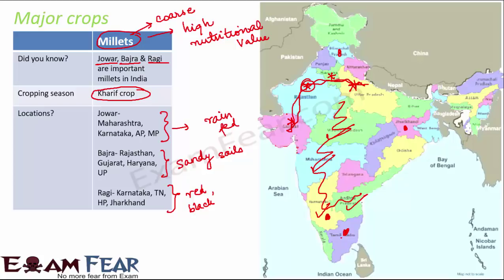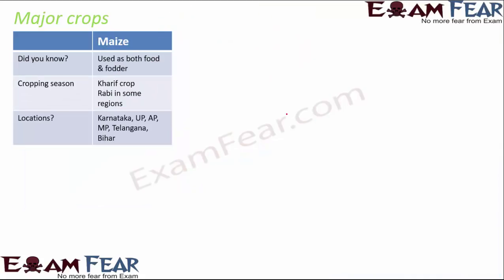You might wonder why millets are not as popular as rice, wheat, or maize despite being nutritious. This is due to less demand for millets and also low productivity. Given India's large population, we need huge production of staple food. Millets have lower productivity and lower demand, making them less popular.